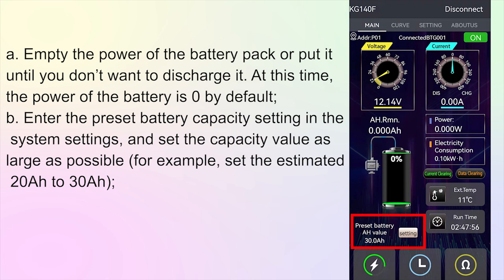Step B: Enter the preset battery capacity setting in the system settings, and set the capacity value as large as possible. For example, set the estimated 20 ampere hours to 30 ampere hours.